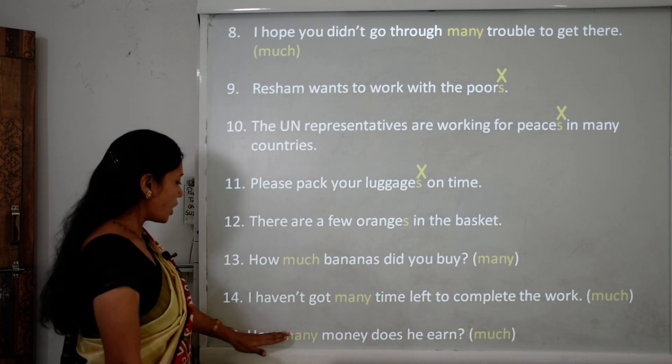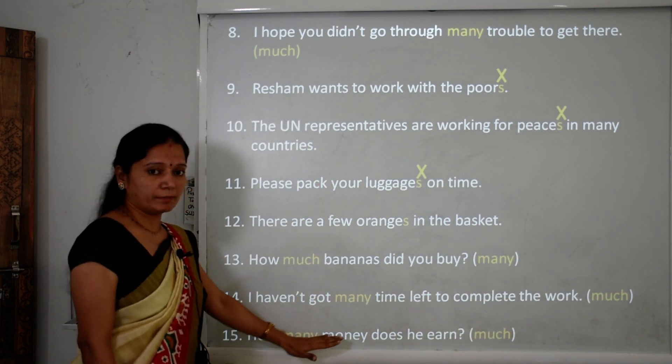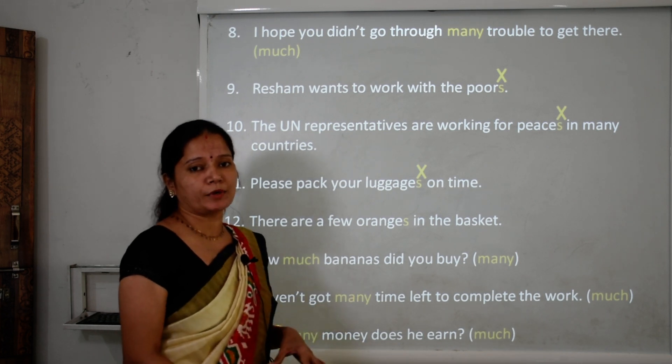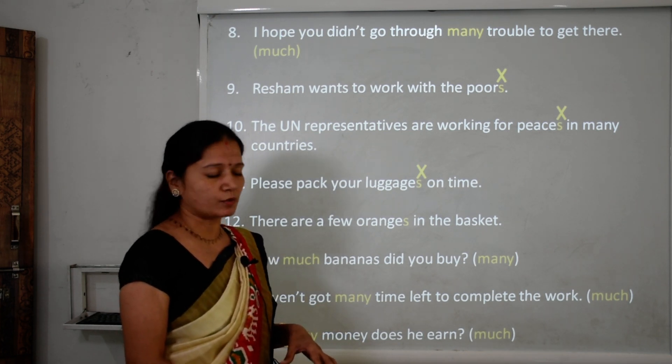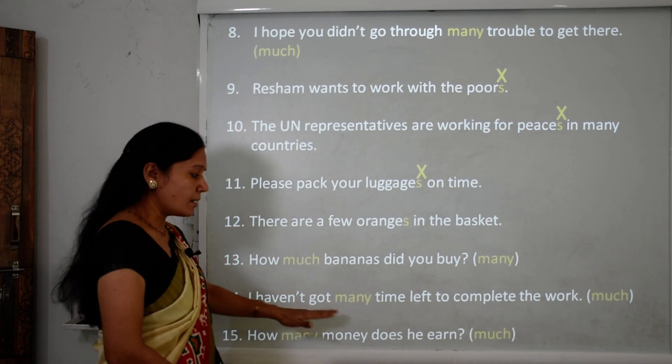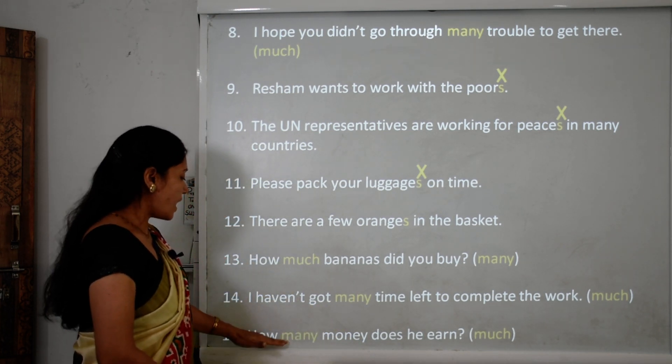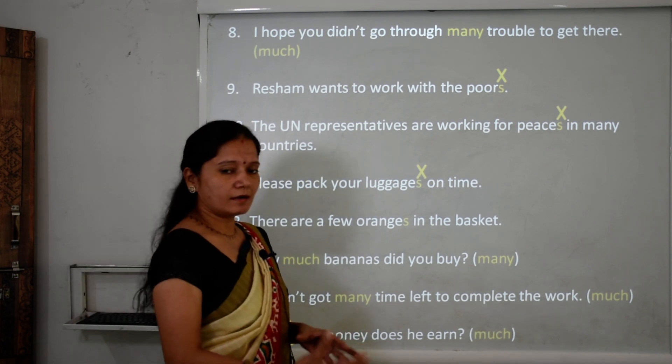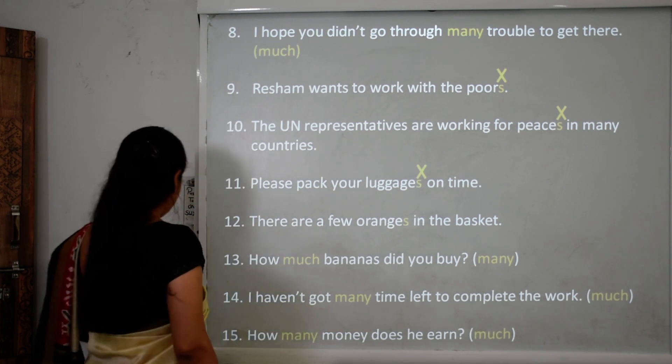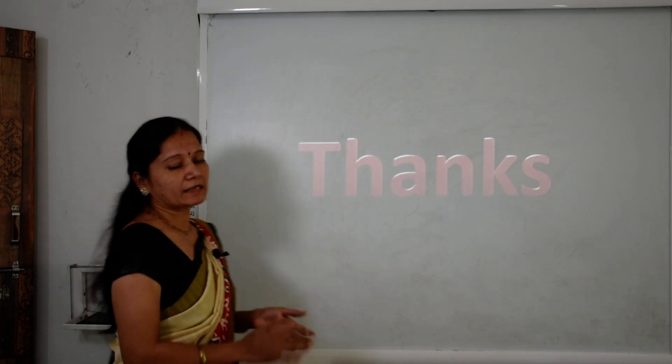Sentence 15: 'How many money does he earn?' Money is uncountable, so we use 'much.' The correct sentence is: 'How much money does he earn?' Practice these exercises again and again. I hope with this video lecture, countable and uncountable nouns are clear to you. Stay home, stay safe. Thank you.